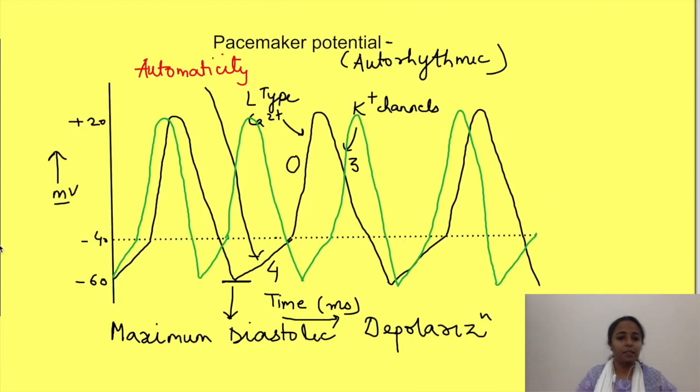In summary, sympathetic activation increases heart rate by increasing the probability of opening of HCN channels and hence increasing the slope of pre-potential. While parasympathetic activation leads to more negative maximum diastolic depolarization and decreased slope of the pre-potential.